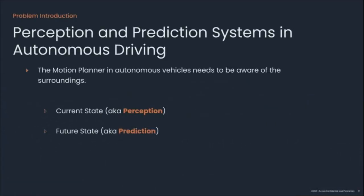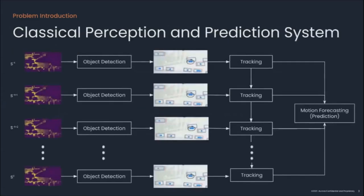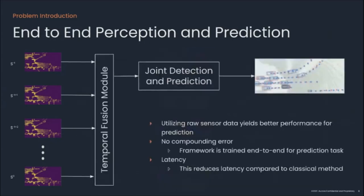In any autonomous system, the motion planner needs to be aware of the current state, known as perception, and the future state, referred to as prediction. This is what a typical perception and prediction system looks like. Having such multiple disjoint modules, this suffers from challenges like information loss, compounding error, and high latency. To address these issues, end-to-end joint approaches are proposed, which yield far better results.